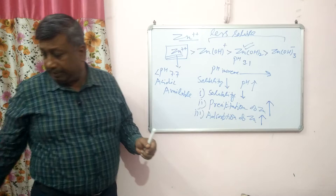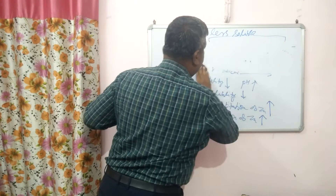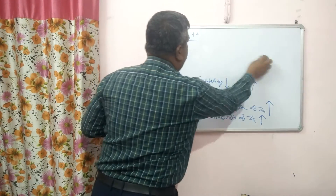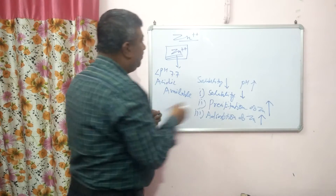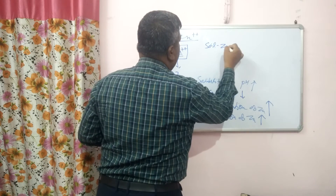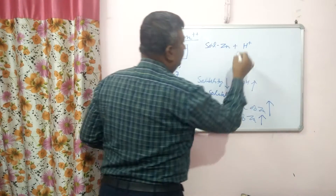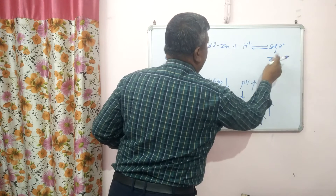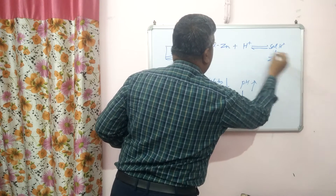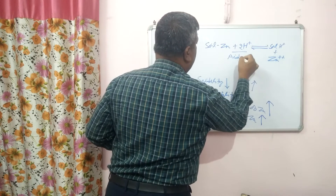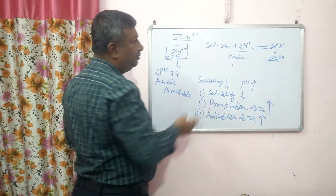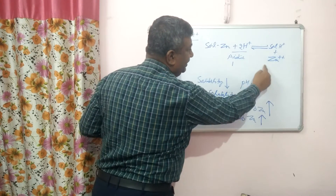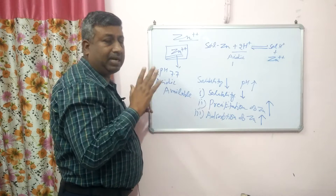Under acidic pH, the Zn²⁺ form is present and this is the available form. Under acidic conditions, hydrogen ions are present and they replace zinc from the soil complex — hydrogen comes onto the soil surface and Zn²⁺ is released into the soil solution. Zn²⁺ is the available form because it is soluble.